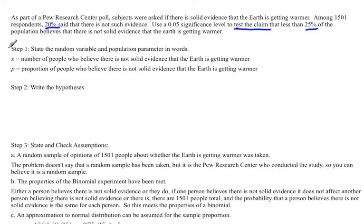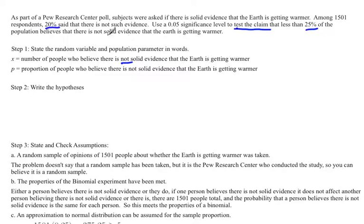The very first step of every hypothesis test is to state the random variable and population parameter in words. Since we're dealing with proportions, proportions come from counting things — the number of people out of the total. In this case, we counted the number of people who believe there is not solid evidence that the earth is getting warmer. The parameter would be the proportion of people who believe that, and the symbol we use for proportion is P.